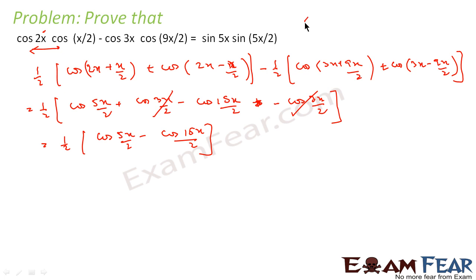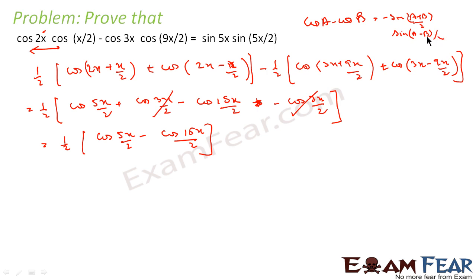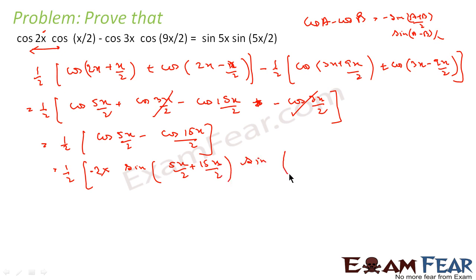Now, cos A − cos B is negative so we use the formula: cos A − cos B = −2·sin((A+B)/2)·sin((A−B)/2). Applying this, we get (1/2)·(−2)·sin((5x/2 + 15x/2)/2)·sin((5x/2 − 15x/2)/2).